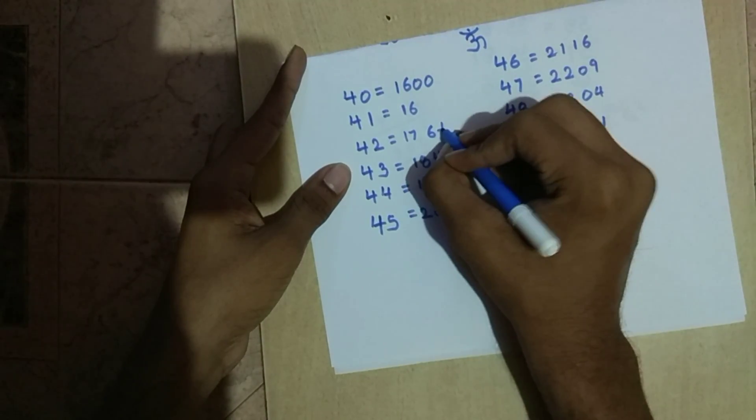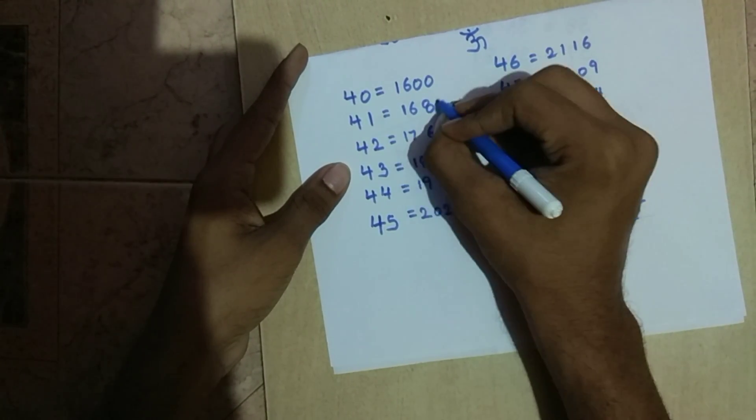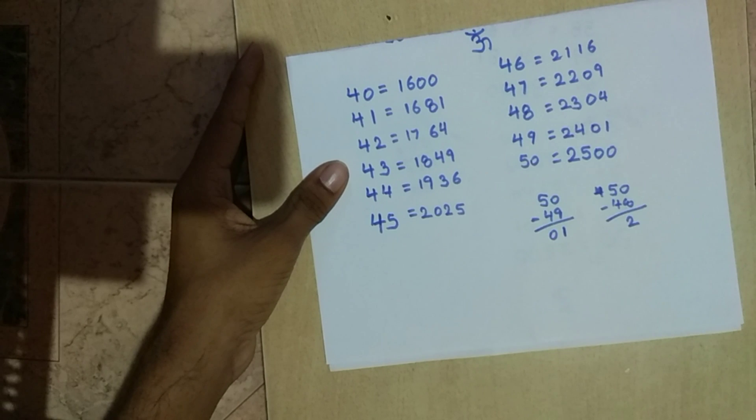So this is how we easily square numbers from 40 to 50. If you liked this video, then please subscribe to my channel for more such videos. Thank you.